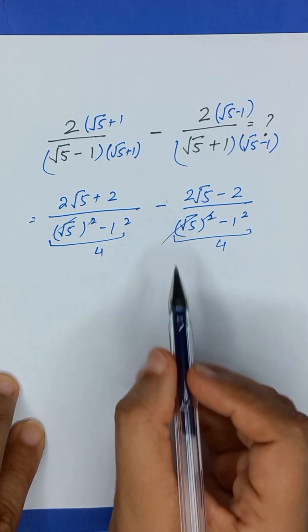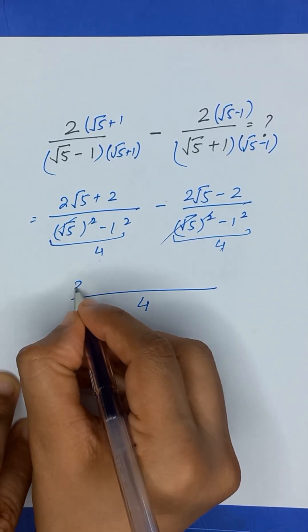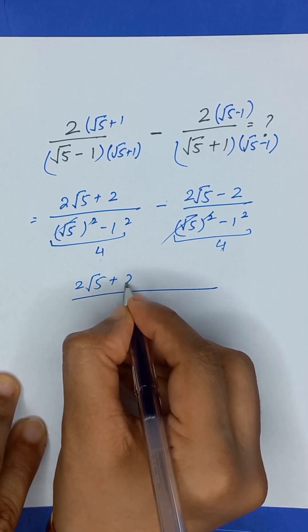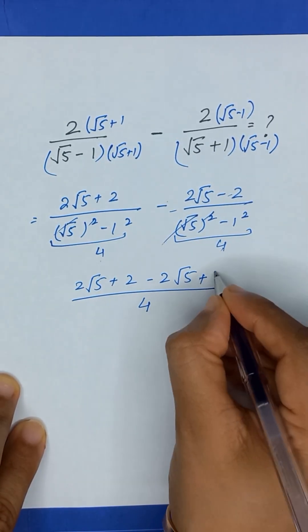Between two fractions we have negative signs, so we will take LCM of denominator. LCM will be 4, and it will become 2 times square root of 5 plus 2, minus 2 times square root of 5—minus minus will become plus.